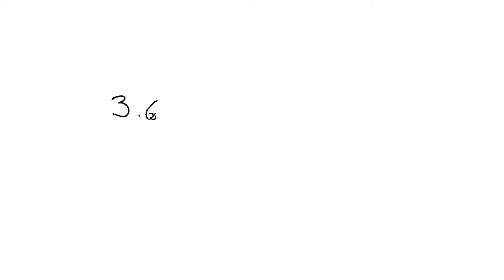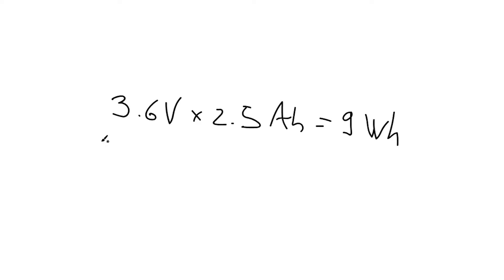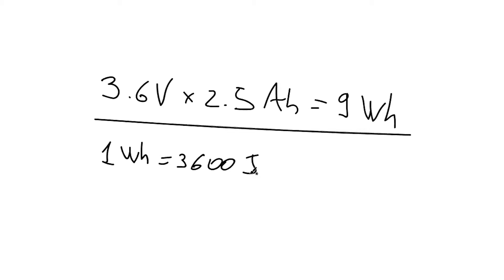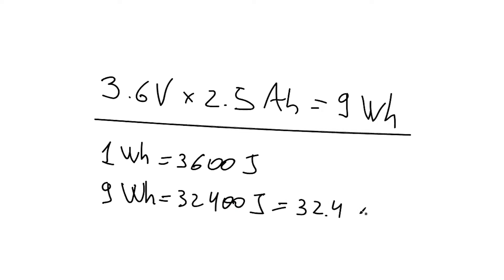And if you multiply the nominal voltage by the nominal capacity, you get the nominal energy capacity of the battery. In this case, it's 3.6V by 2.5 amp hours, which is 9 watt hours of energy. The energy capacity of batteries is usually reported in watt hours just because it's a more convenient unit. But you can convert it to joules by multiplying by 3600. So in this case, 32,400 joules.